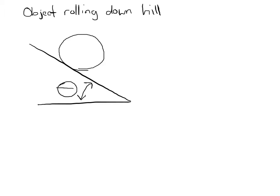In this case, what we're worried about is some sort of round object rolling down a hill. It's important that it's rolling — that piece is critical. Because if the object does not roll, for example if there's no friction, it's just going to slide. If there's no friction, there's no torque acting on the ball, so it wouldn't roll and would just slide down the hill.